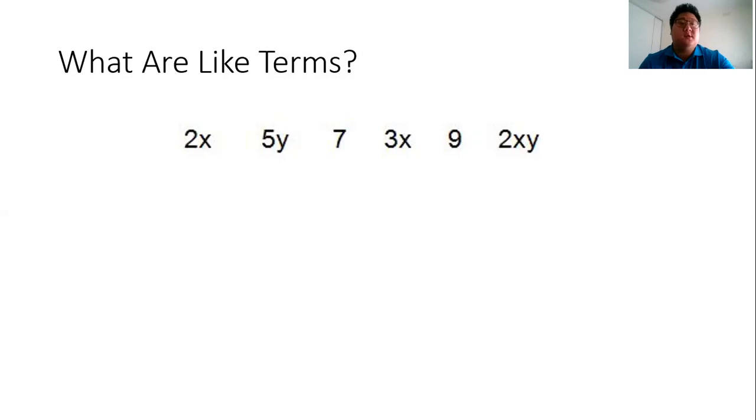For starters, what are like terms? We need to know these. We'll take these six terms as an example: 2x, 5y, 7, 3x, 9, and 2xy. Just to recap, this means two times x, this is five times y, this is seven alone, three x, nine, two times x times y.